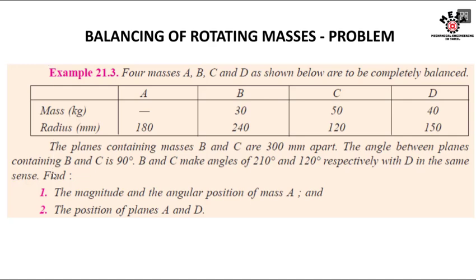In this video lecture we are going to see a problem based on balancing of rotating masses. Four masses A, B, C, D are to be completely balanced. The mass of A is not given — that's what we are going to find. B is 30 kilograms, C is 50 kilograms, and D is 40 kilograms.